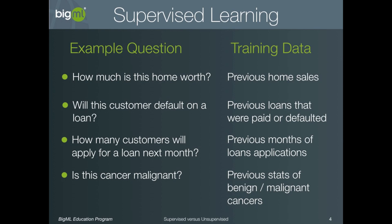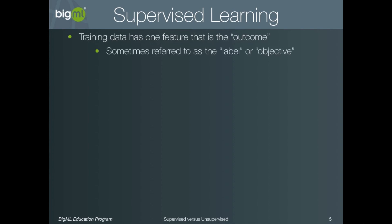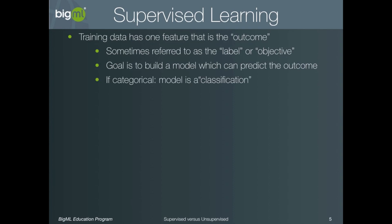Let's review the key characteristics of supervised learning. First, the training data has at least one feature that is the outcome, sometimes referred to as the label or objective. The goal is to build a model which can predict the outcome for new instances. If the objective is categorical, this model is called a classification. Whereas if the objective is a numeric value, then the model is called a regression.